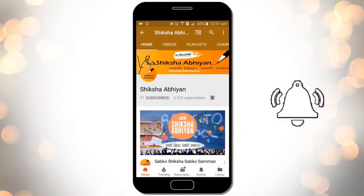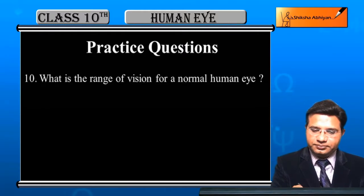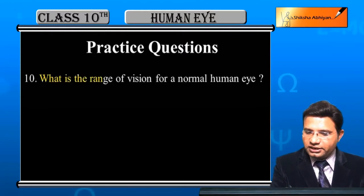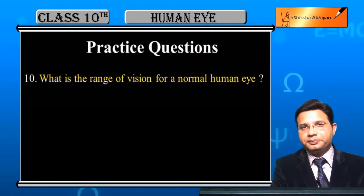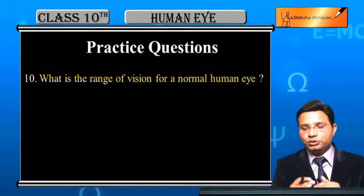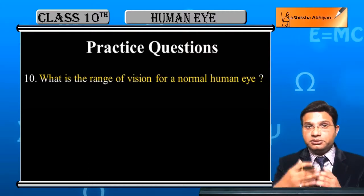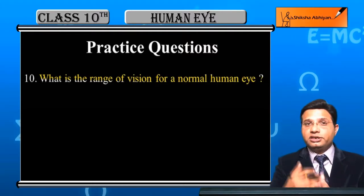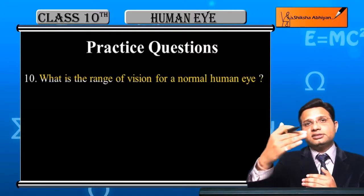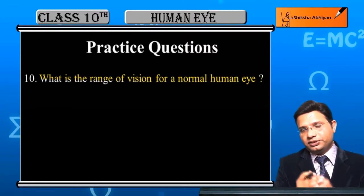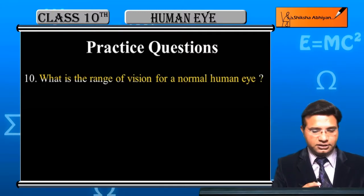Question number 10: What is the range of vision for a normal human eye? Normal human eye के लिए vision का range क्या है — vision मतलब देखना, उसकी range मतलब कहां से कहां तक के object को हम देख सकते हैं, कितनी दूर और कितनी पास के object को हम देख सकते हैं — इसे हमें explain करना है।